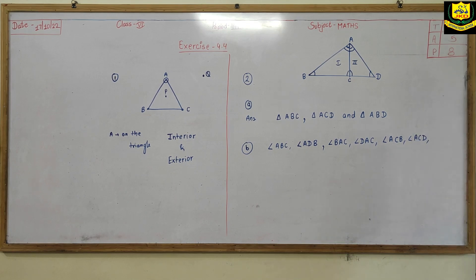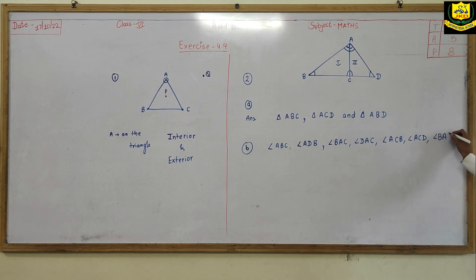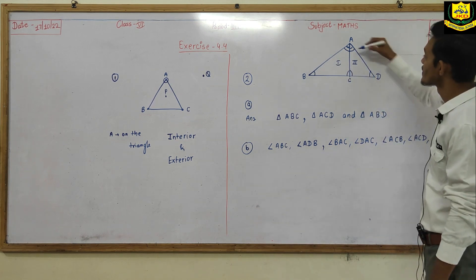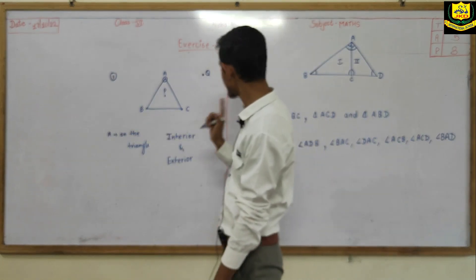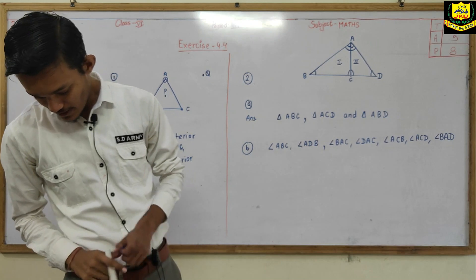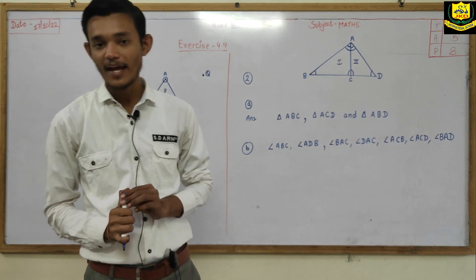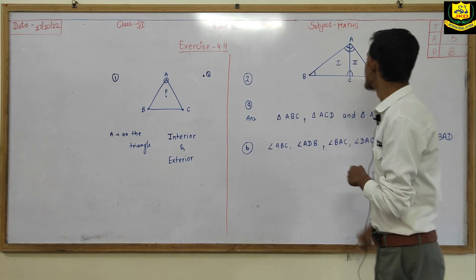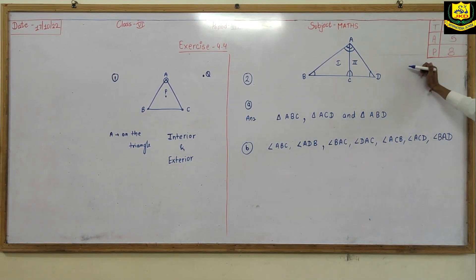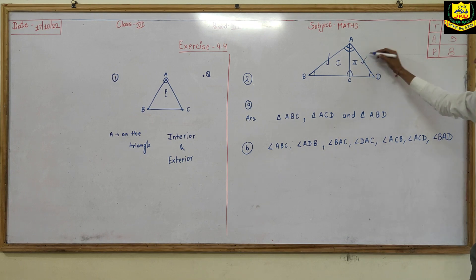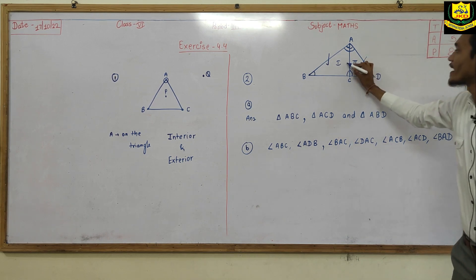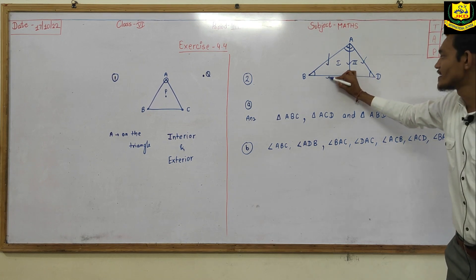The remaining angles are: fifth, angle BAD; and the complete angle BAC combined with ACD gives us the full angle at A. So angle BAD and angle BAC are among the seven angles listed.